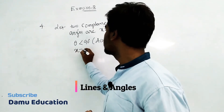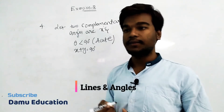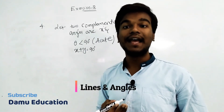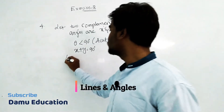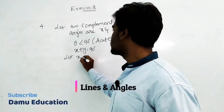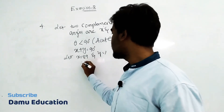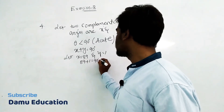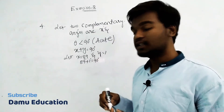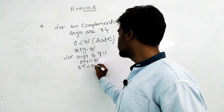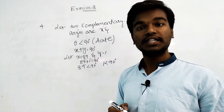The condition is x plus y equals 90 degrees. For acute angles, the largest possible acute angle is 89 degrees. Let x equal 89 degrees and y equal 1 degree: 89 plus 1 equals 90 degrees. Both 89 and 1 are less than 90 degrees, so both are acute. This confirms they form a complementary pair.